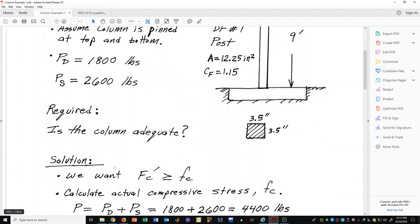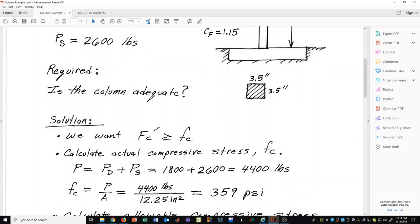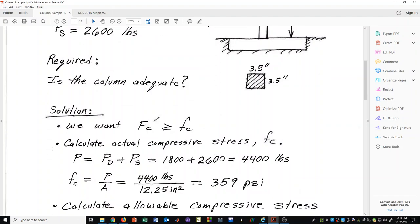Here is the solution. We want our f sub c prime, our allowable stress, to be greater than or equal to the actual compressive stress. So the first thing that we're going to do here is calculate the actual compressive stress f sub c.